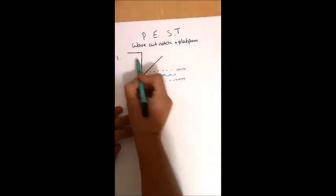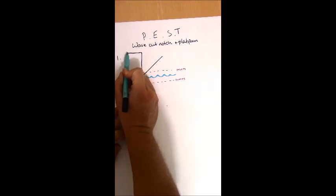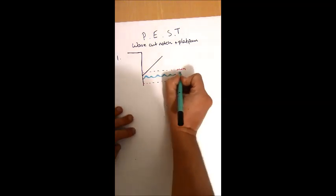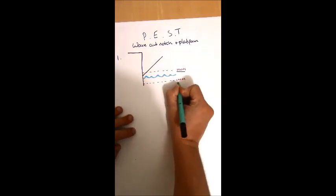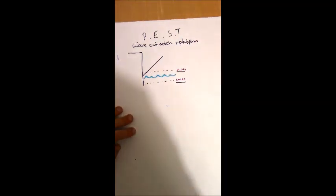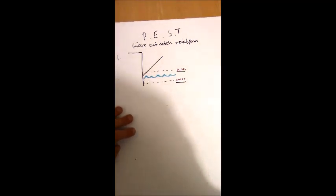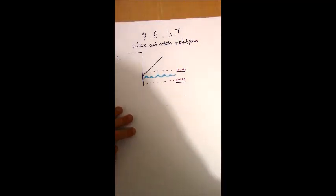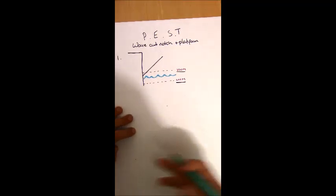In the first stage we have a cliff. That cliff at its base is being eroded by the sea between two really important marks: the high water mark and the low water mark. We could just use the term erosion, but we want to push ourselves to use high-level terminology — more specific types of erosion like hydraulic action to explain what's going on.